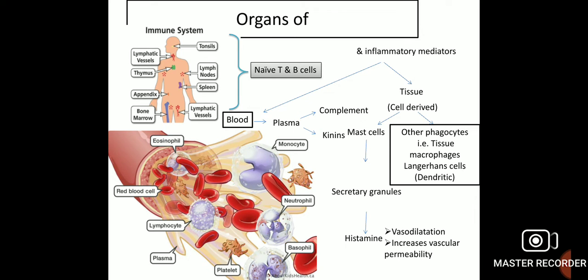The target organs of the immune system include the spleen, thymus, lymph nodes, lymphatic vessels, bone marrow, tonsils, and appendix. These organs contain naive T and B cells, which are required to protect and heal the body.